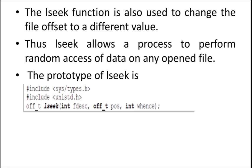Next, I will move on to LSEEK. Seeking means, in simple words, if you want to move from one position to another position in a file, you can do that. The LSEEK function is used to change the file offset to a different value. LSEEK allows a process to perform random access of data in any opened file — you can move from any position to any position in an opened file using the LSEEK function.